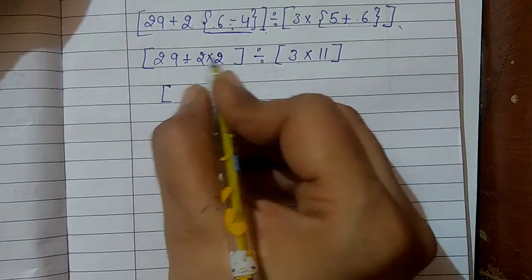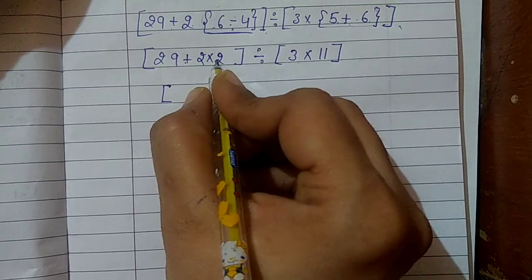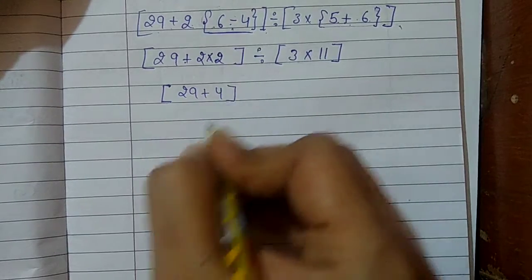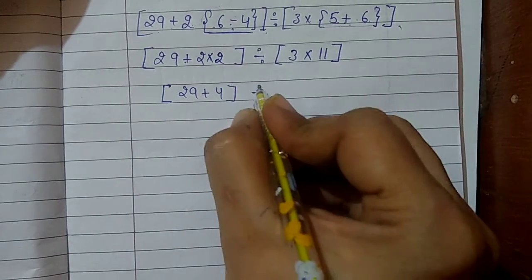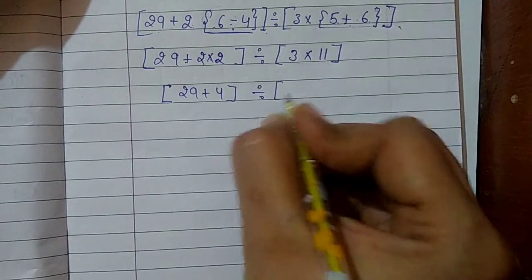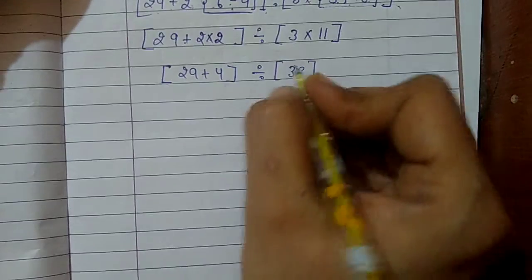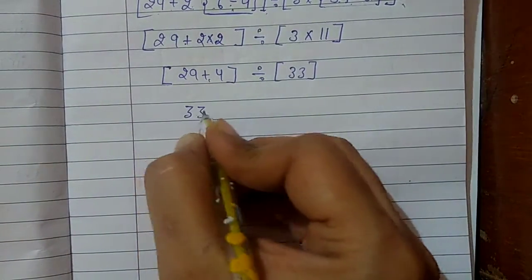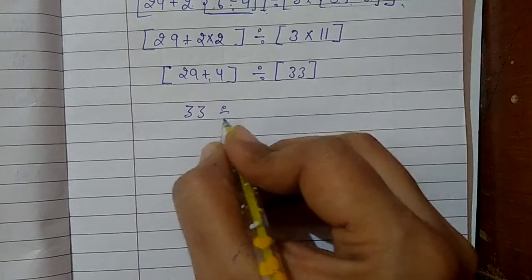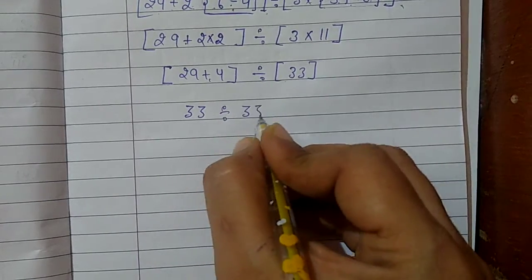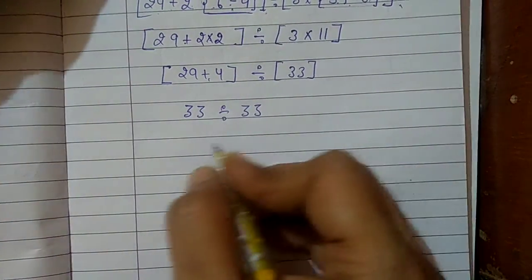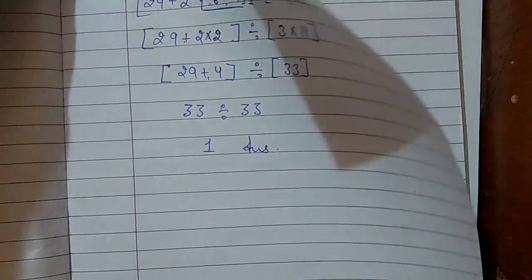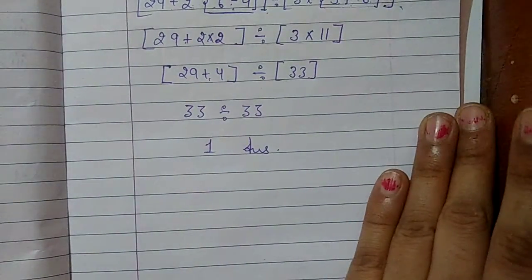Now in this bracket, addition and multiplication — so first I will solve the multiplication. Only multiplication is there: 33. Now only addition is there: 33. Now the bracket is open because one number is there — bracket will be open. 33 divided by 33 — the answer will be 1.